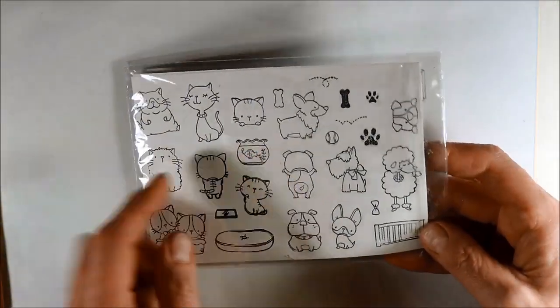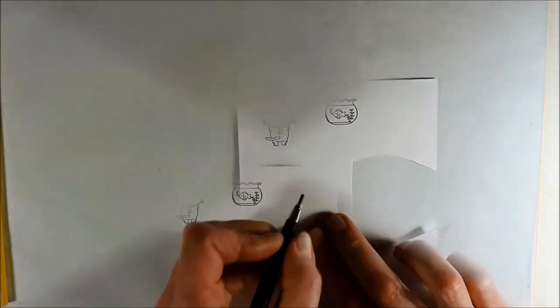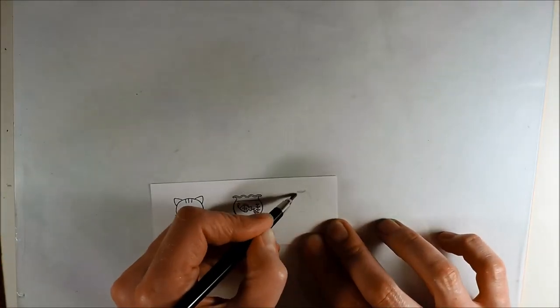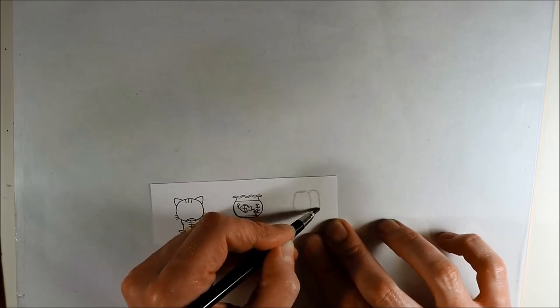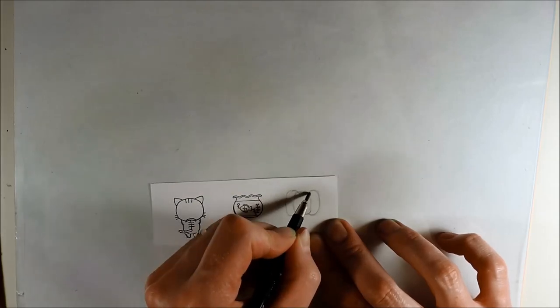From this stamp set I have stamped this cat and the fish tank, and now I am drawing a pumpkin since I don't have any images, but I think it's quite easy to draw one.